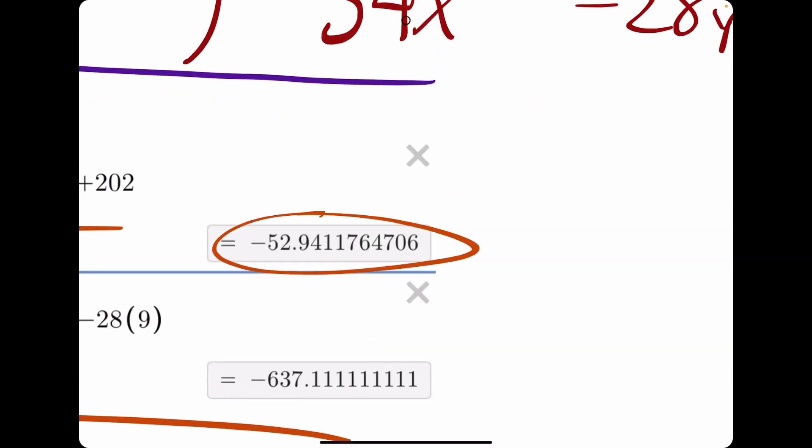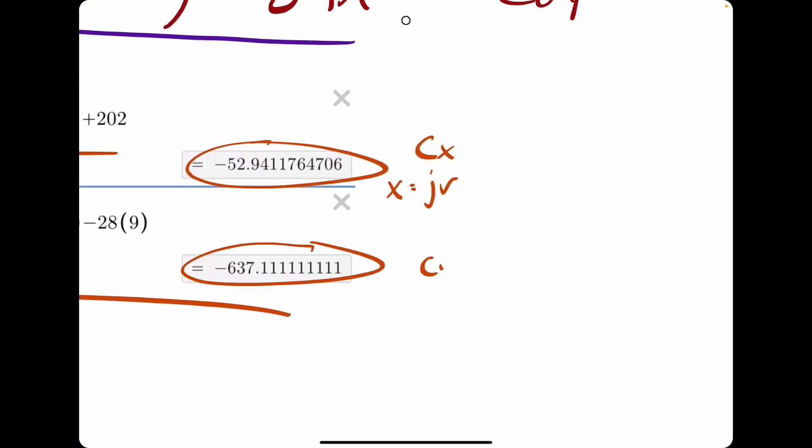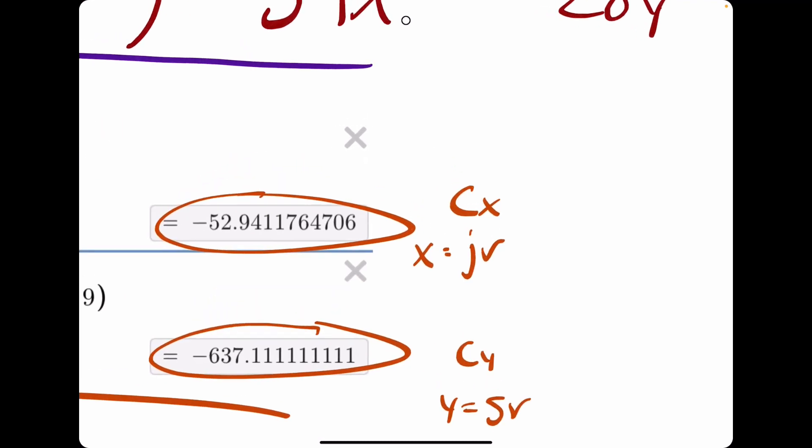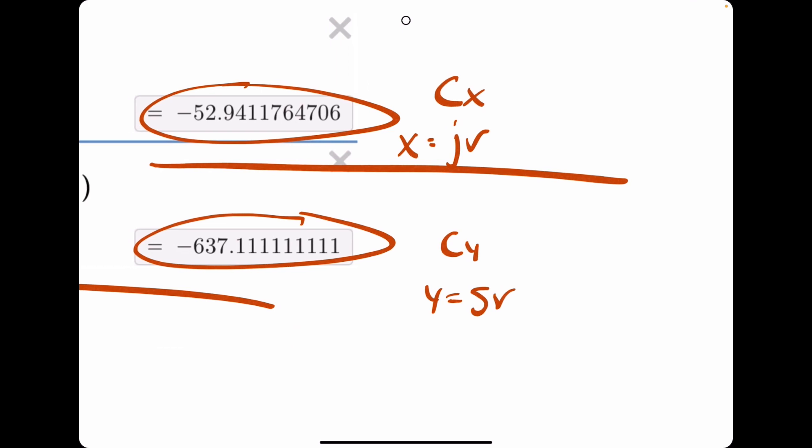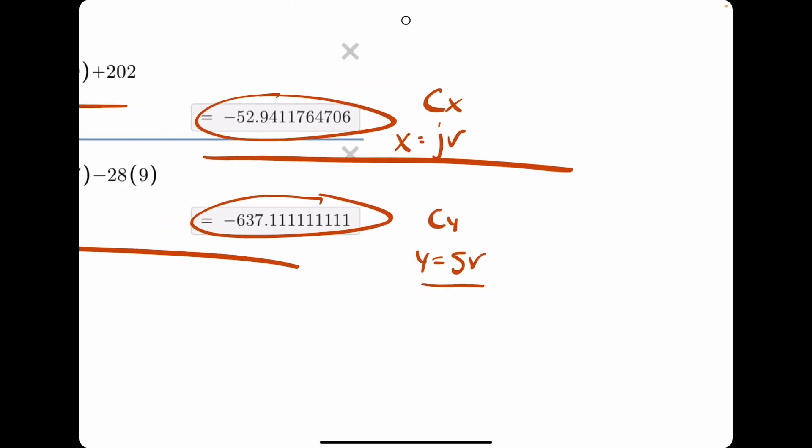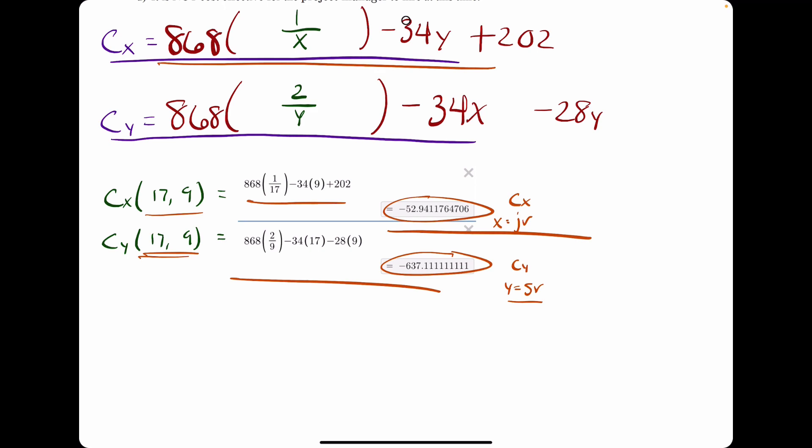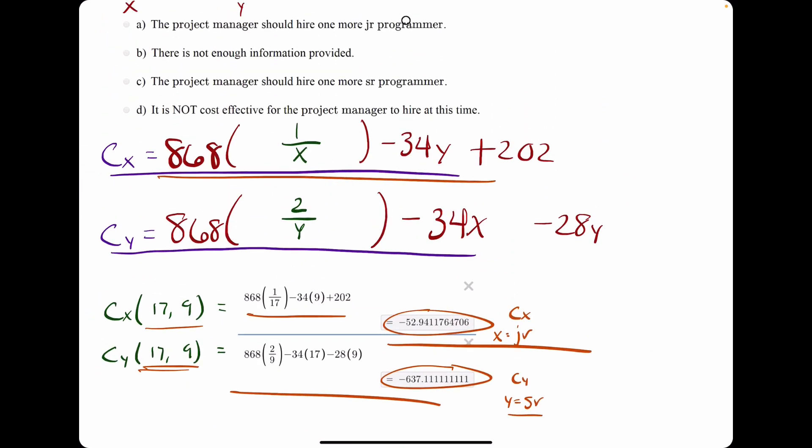We have negative 52, negative 53-ish. This is the marginal cost associated with hiring one more junior programmer, since x was junior programmers. And then this is the marginal cost with respect to hiring one more senior programmer. Meaning, if we hire one more junior programmer, the cost for the company will go down about $53. That's pretty good. But then, if we hire one more senior programmer, the cost for the company will go down over $600. Because they're asking which one is most cost effective, the second one is much more cost effective because it's going to lower the cost for the company by hundreds and hundreds of dollars relative to hiring one more junior.